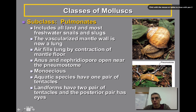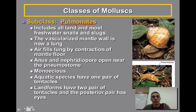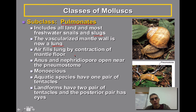Terrestrial gastropods are often put into a subclass called the pulmonates. If you think about the word, 'pulmonate' is similar to 'pulmonary' — the relationship between the respiratory system and the cardiovascular system of the animal, those two systems working together. This includes all the land and most freshwater snails and slugs. The vascularized mantle wall is now considered a lung, and air fills the lung by contraction of the mantle floor. It enters through the pneumostome, and contraction of that mantle helps bring in air and fill that area considered the lung.